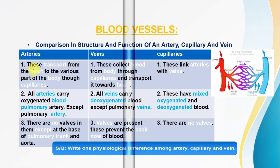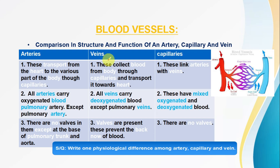The first point is function. Arteries take blood from the heart to body parts. Veins take deoxygenated blood from the body back to the heart — the opposite work. Capillaries provide links between arteries and veins, and they are responsible for the exchange of materials.